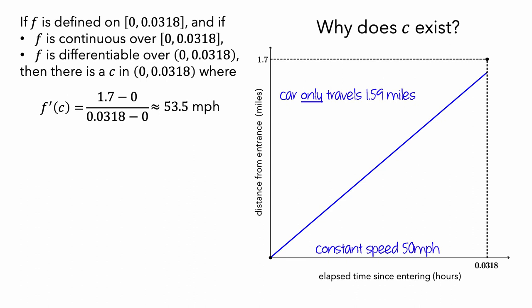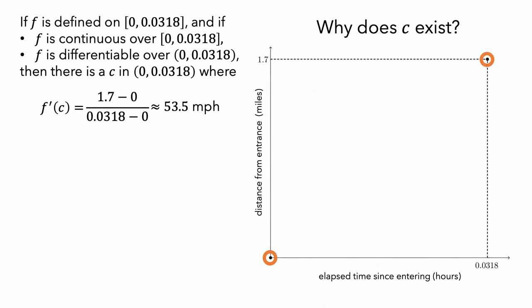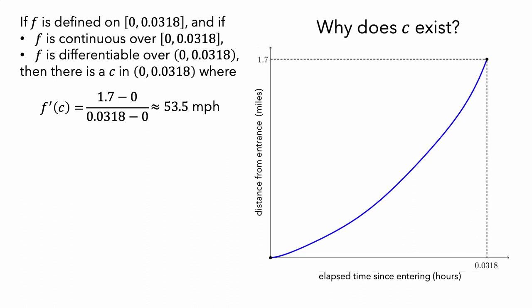Now we know that a graph of the car's distance versus elapsed time needs to start here and end here, and that it can't have a constant slope. Here is one potential graph that shows the car traveling the 1.7 miles in 0.0318 hours. We can use a green line segment to represent another car that travels at a constant rate and covers the same distance in the same amount of time. The green car's constant speed is 53.5 miles per hour, and this is the same as the blue car's average speed.